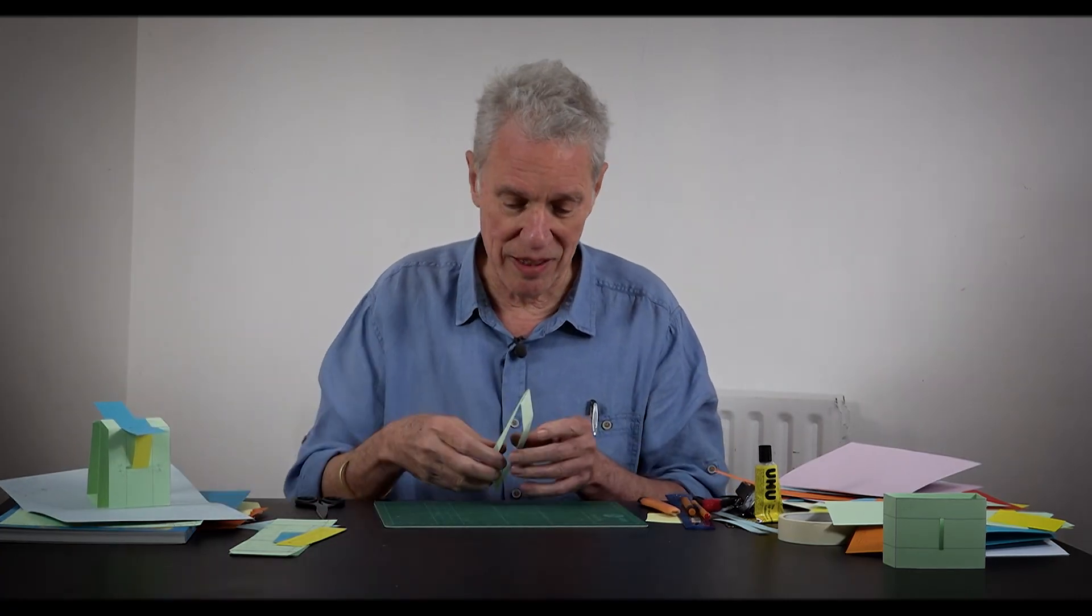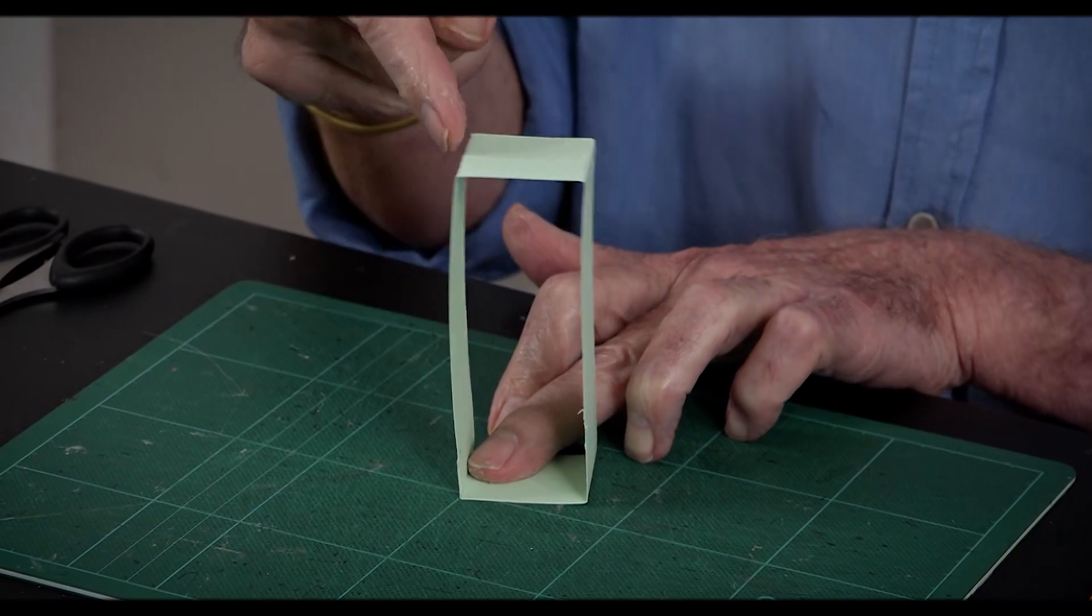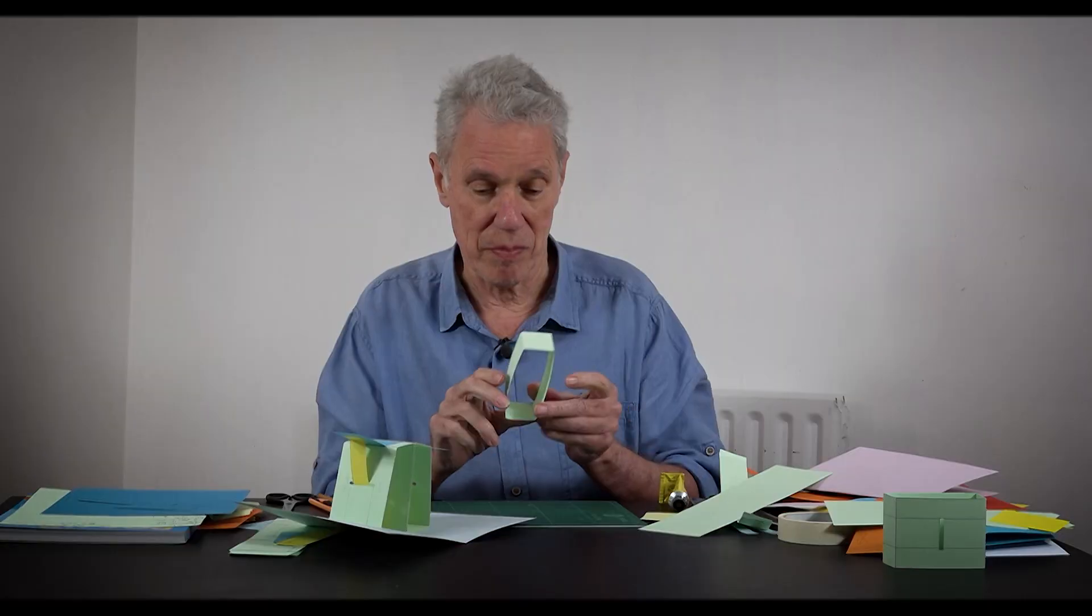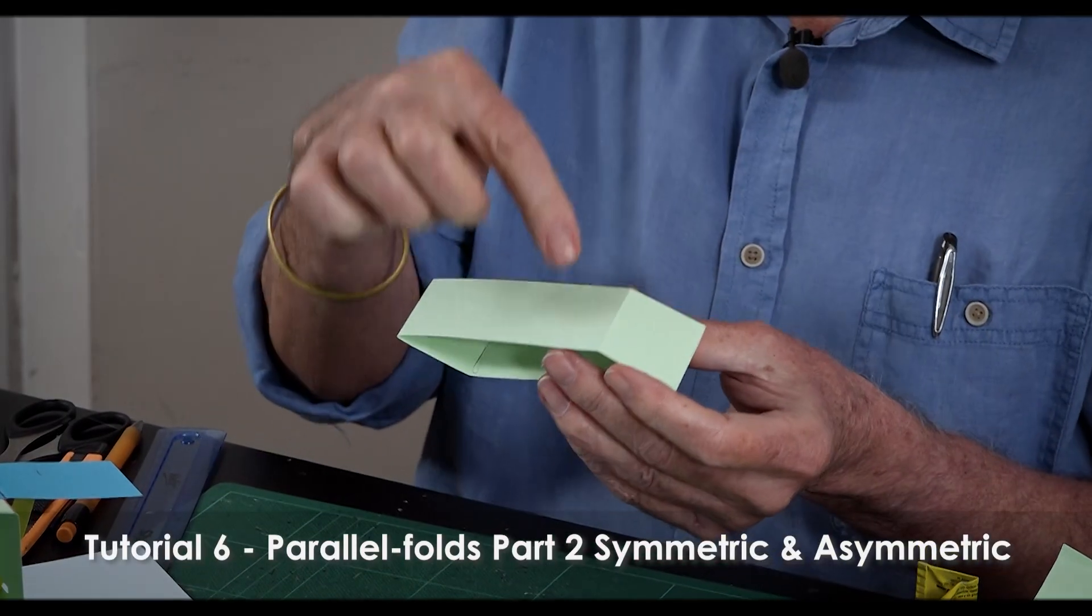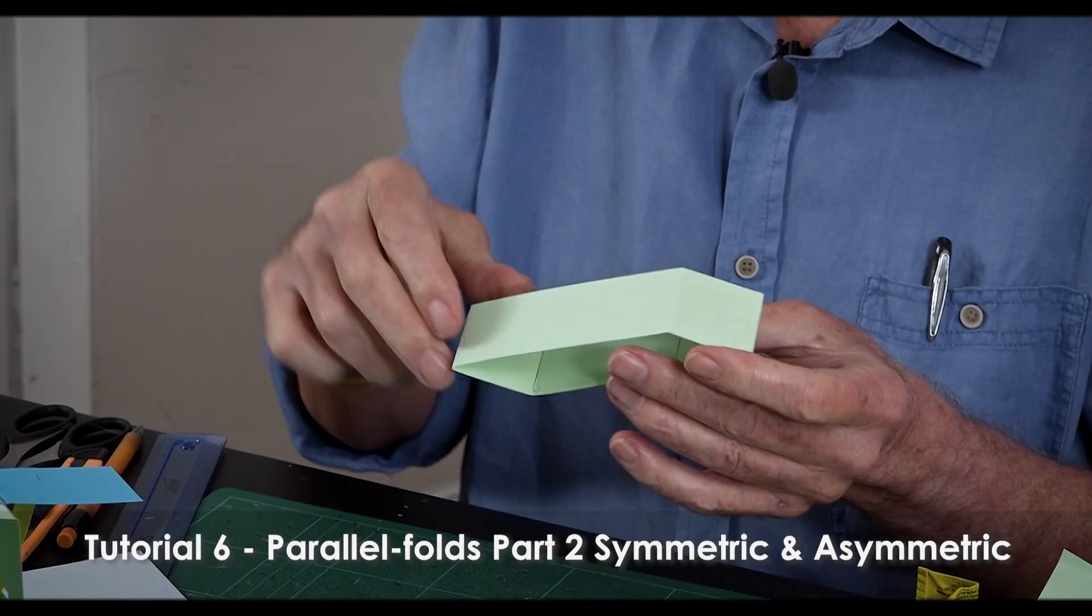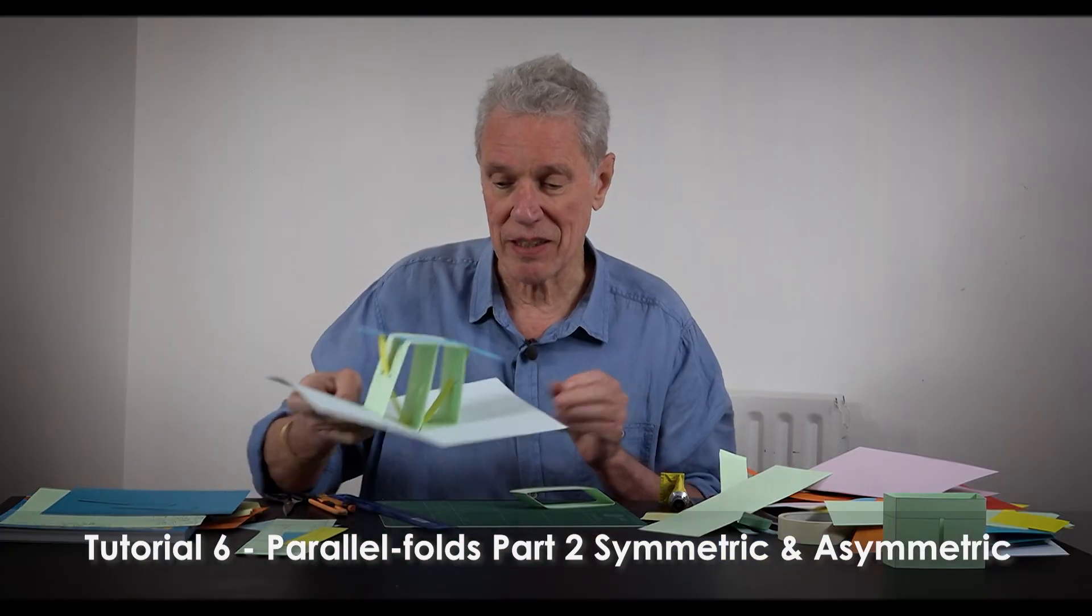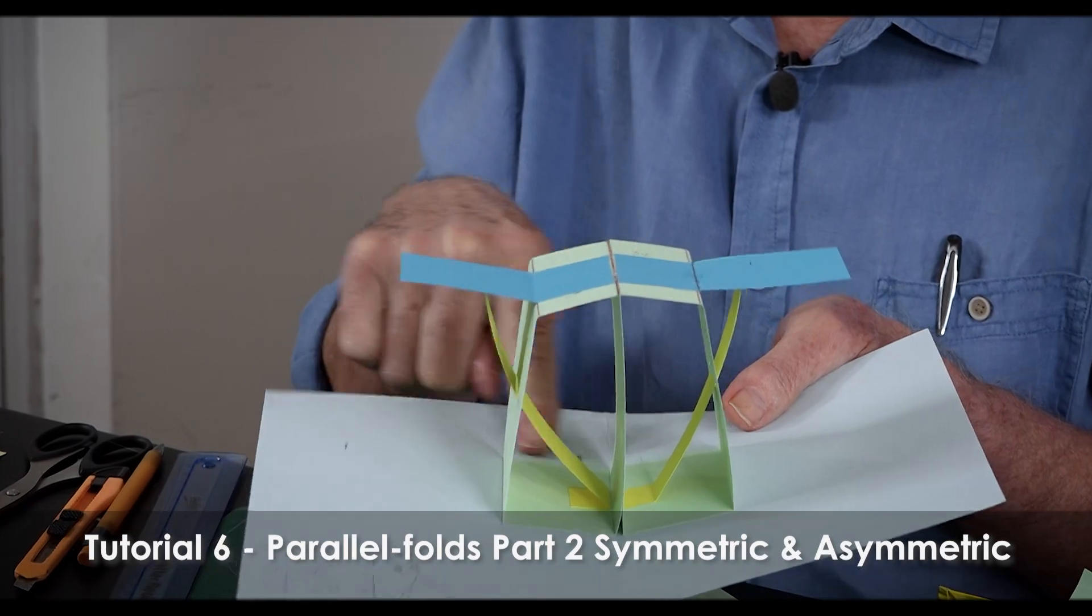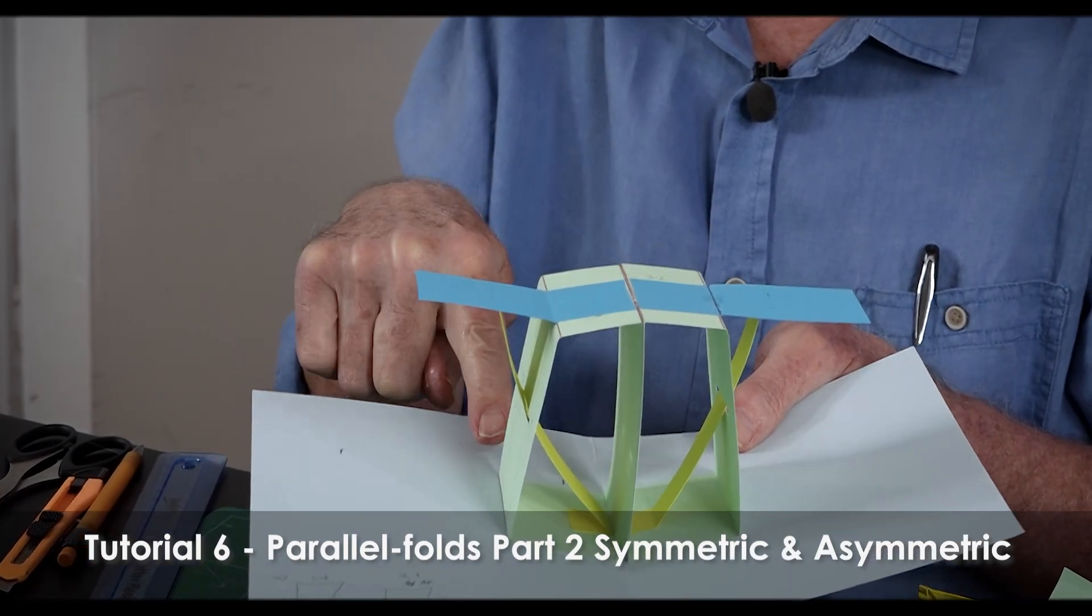If I start with this parallelogram, the two long sides are the same and the two short sides are the same. It will go flat. You've got a long side and a short side and a long side and a short side. On this mechanism you have an asymmetric quadrilateral. It's not a parallelogram, all four sides are different.